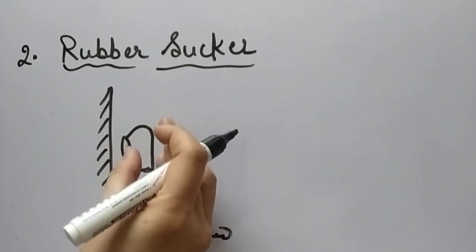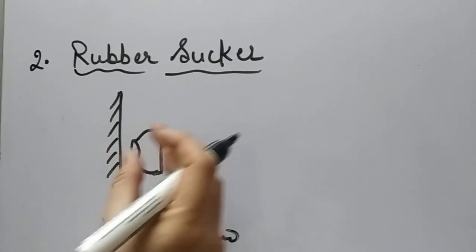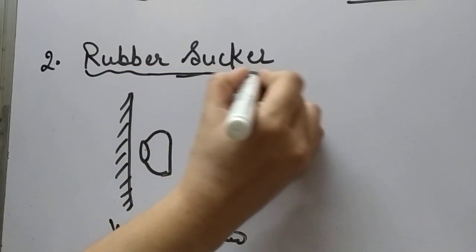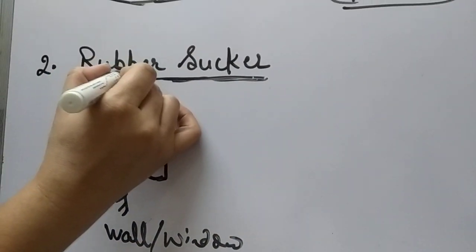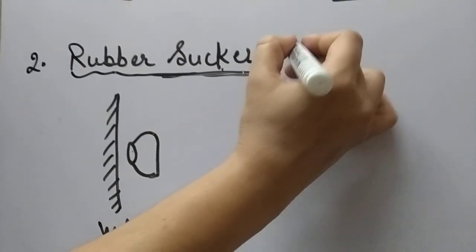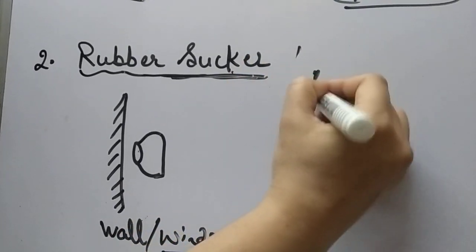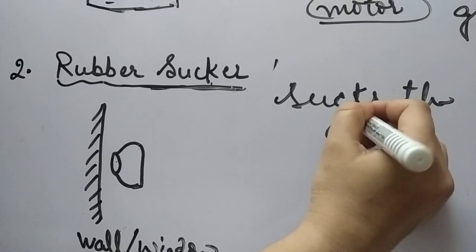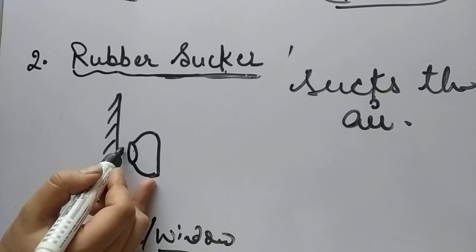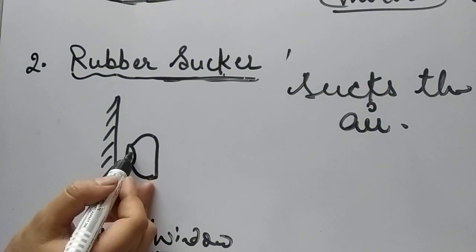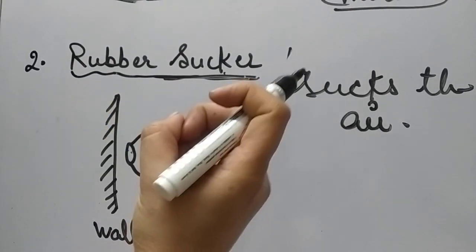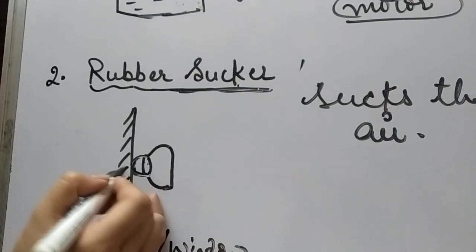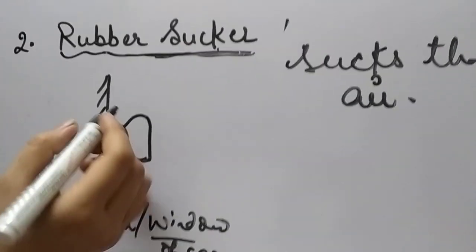And what we do, we simply push this rubber sucker over the window. Now what it does? By the name it is clear, it is a sucker. It is made up of rubber and it is a sucker. What does it suck? It sucks the air. Now, whatever air is in between the window and itself, it sucks it. It absorbs all the air. So immediately it comes and sticks to the window.